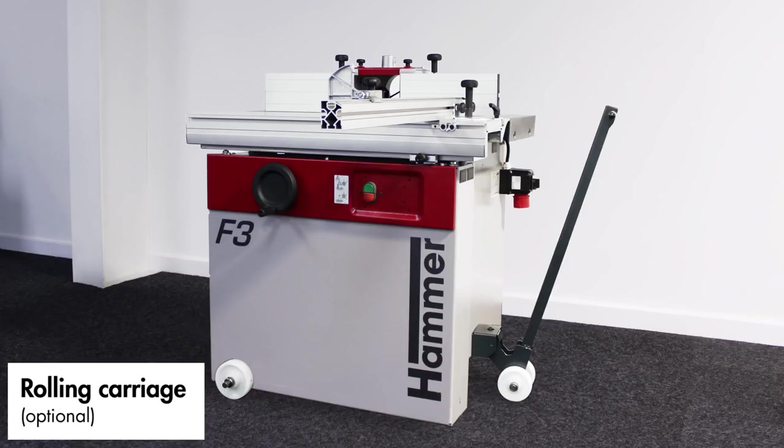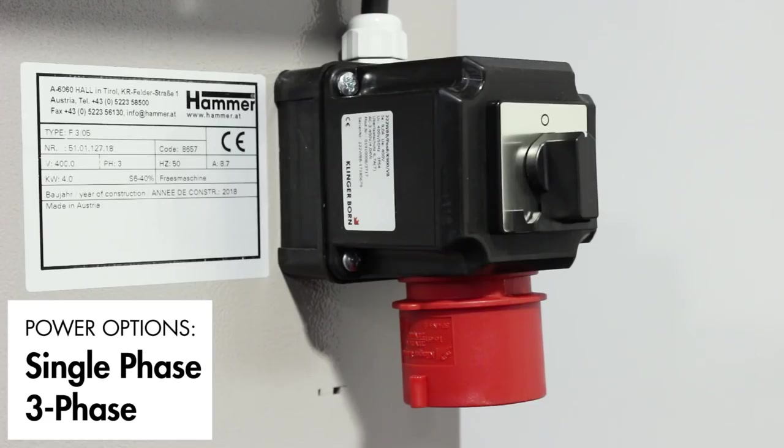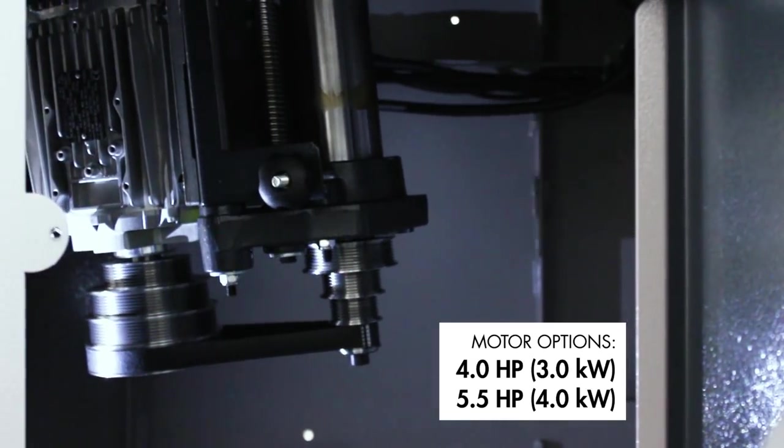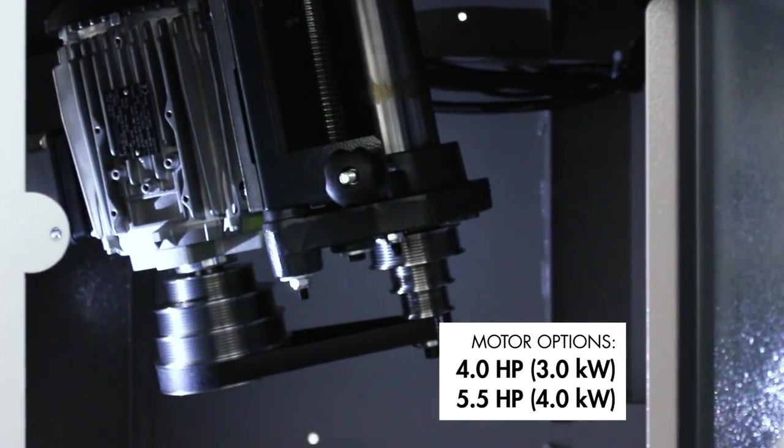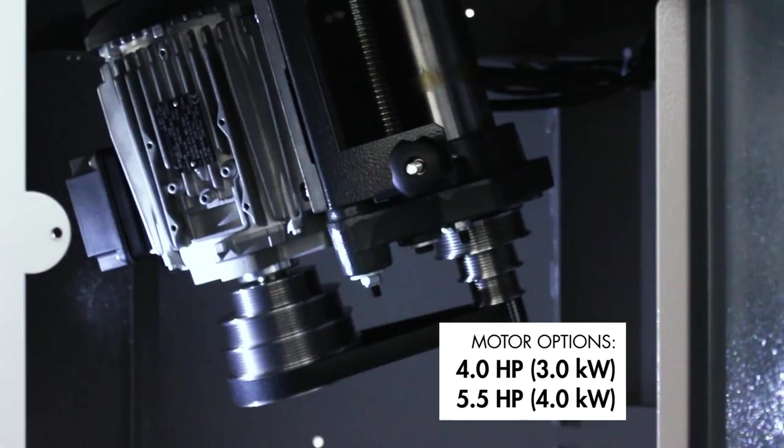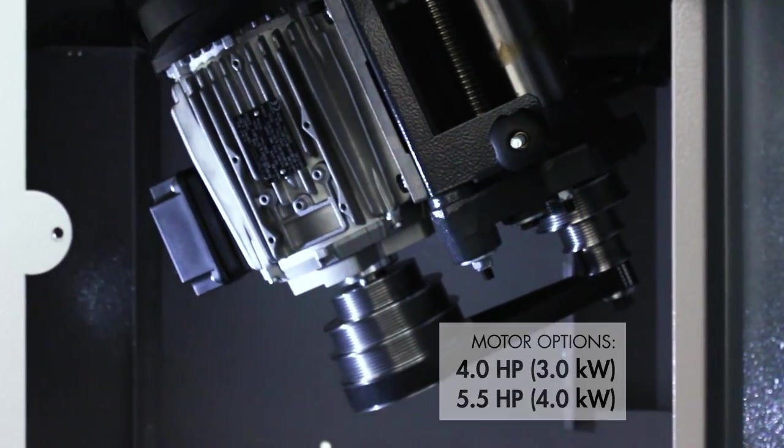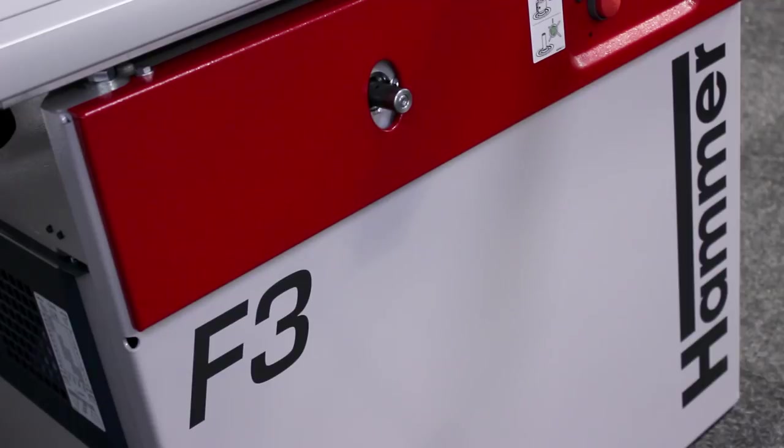It is available with both single phase and three phase power options. The motor produces a four horsepower output which can be upgraded to 5.5 horsepower to create a more industrial machine. The Hammer F3 spindle molder is a robust and versatile machine that offers precision, stability, and operating comfort at a great price.